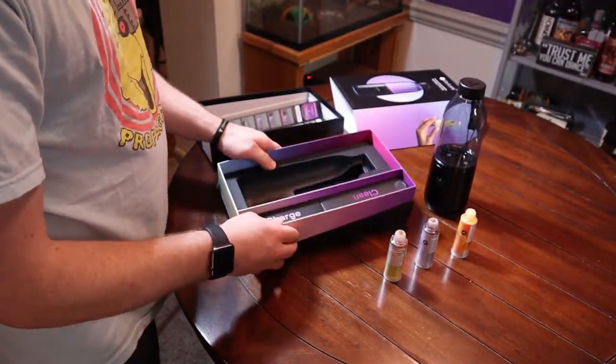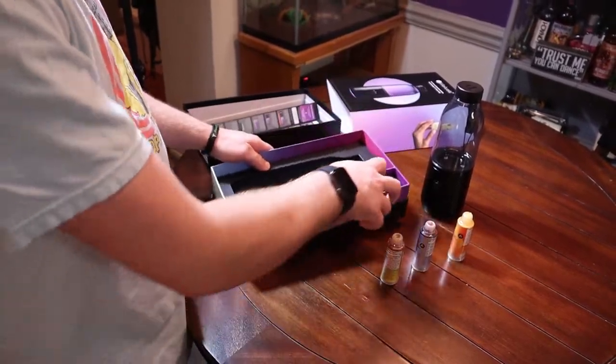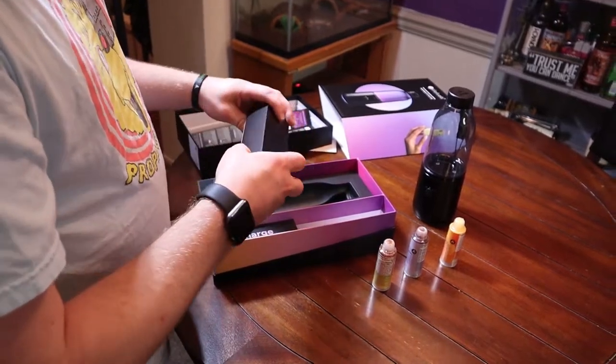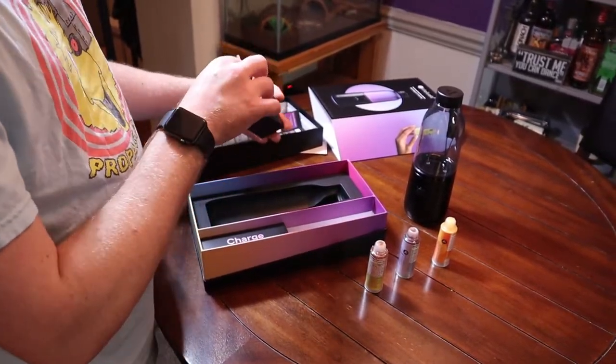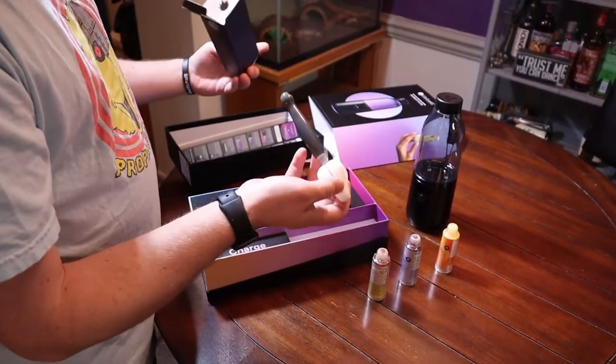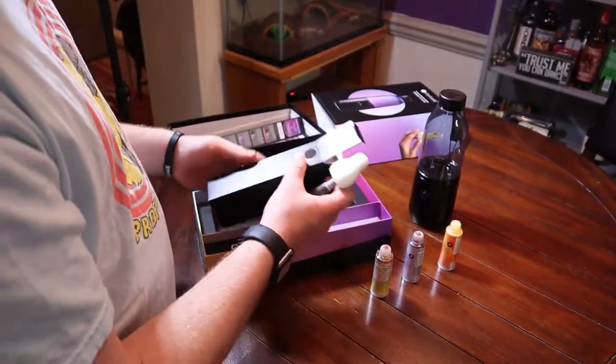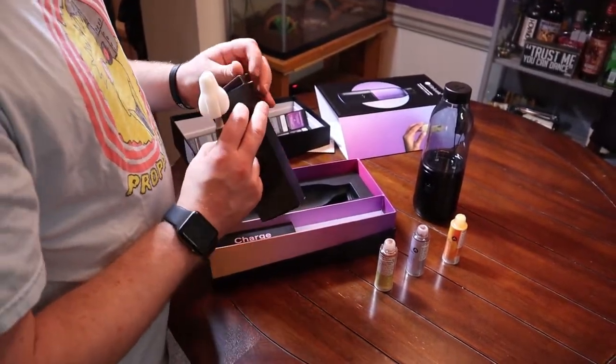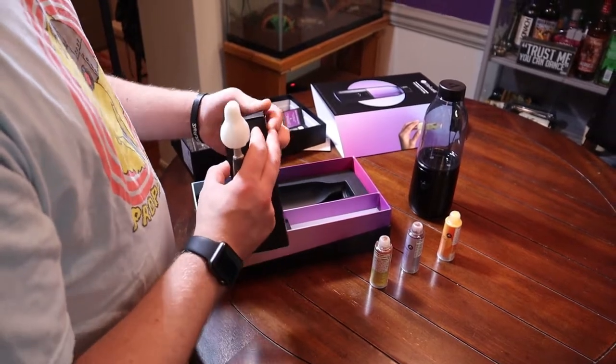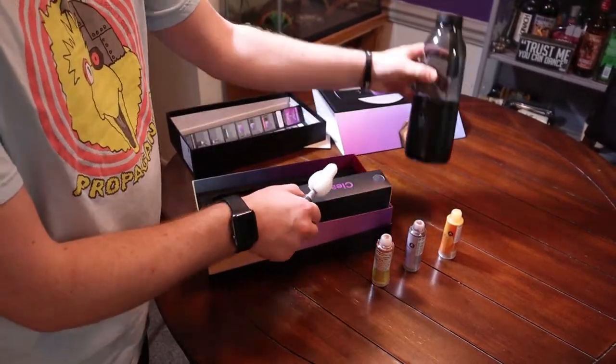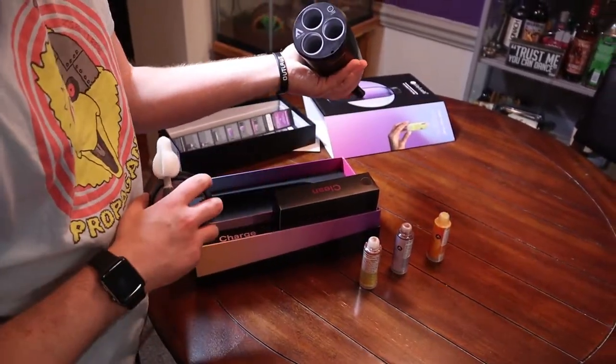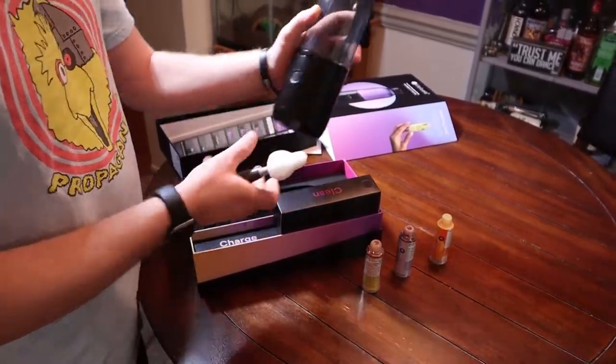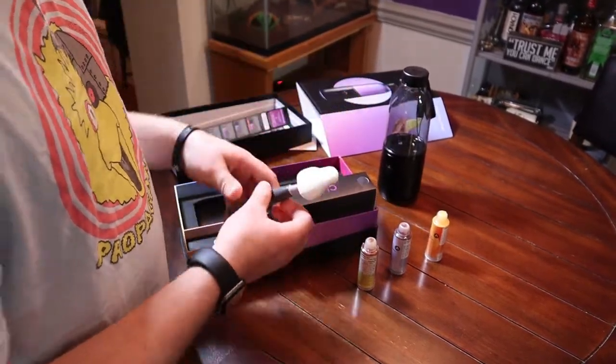So we got two things in here, clean and charge. Let's look at clean. It's a little brush, that's nice. I'm assuming that's for cleaning the little spots where the fuel pods go. The syrup or whatever they use could get nasty in there, so it's nice that they include a little wand to clean those off.